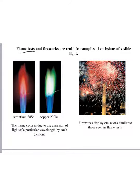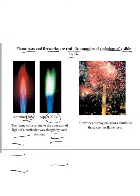Flame tests and fireworks are real life examples of emissions of visible light. You can see that these different elements give different colors, and it's because their pattern of lines is going to be different than hydrogen. So you might have a pattern like that, and so the wavelength that you see might be different.